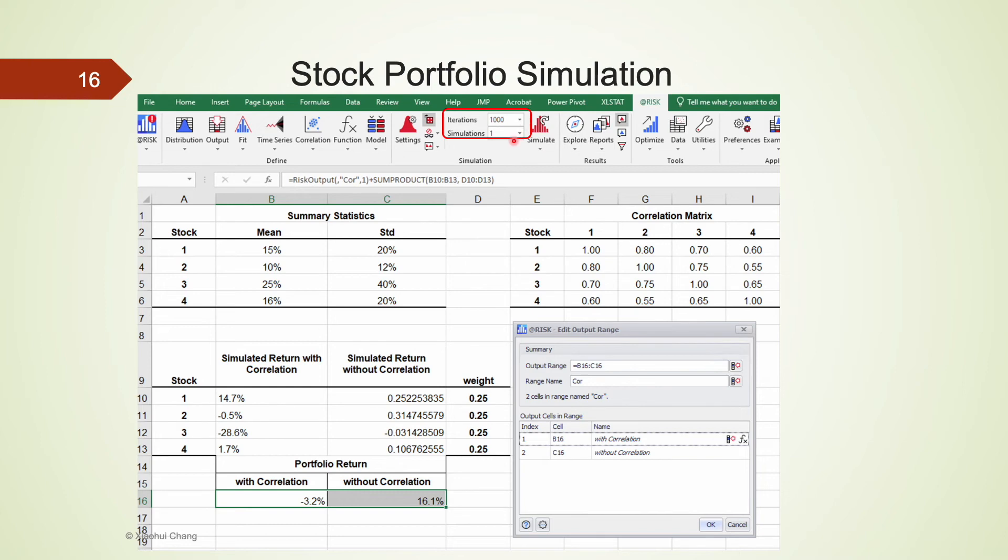Set the number of iterations to 1000, a number of simulations to 1, meaning that the model will run 1000 times generating 1000 returns for each portfolio. Now we click on simulate and wait for the results from the two different scenarios.